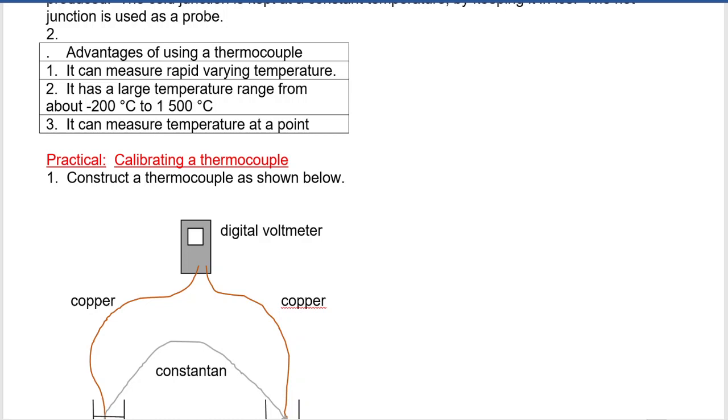We're going to look at a practical situation whereby you are calibrating a thermocouple. So in calibrating a thermocouple, you need a digital voltmeter, the two wires. In this case, we're using copper and constantan, which is a kind of alloy. And then you need two beakers or containers where you can place your ice and hot water.